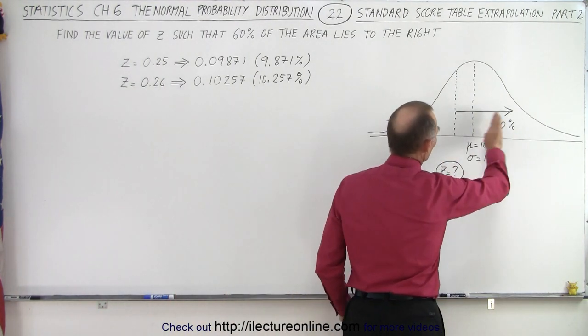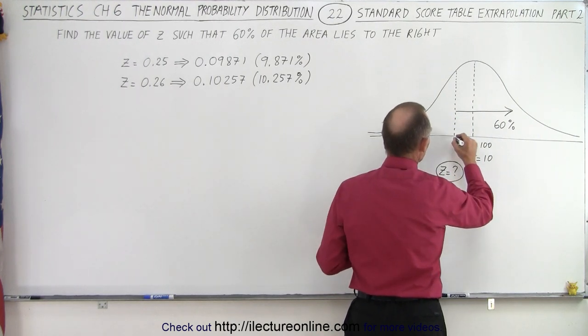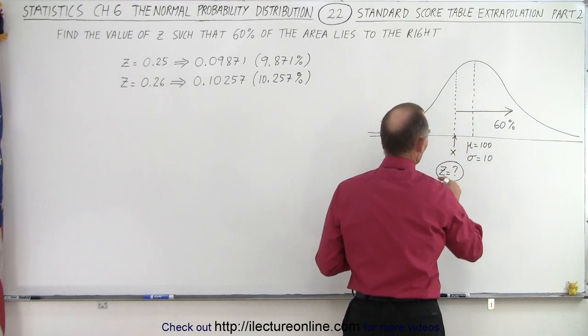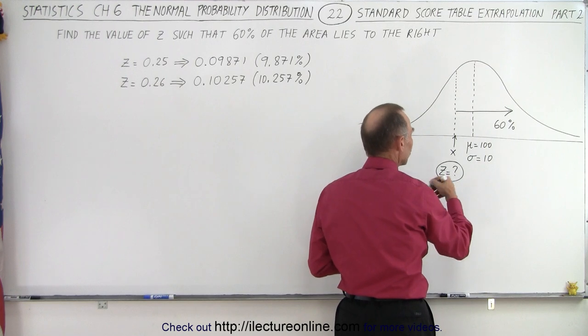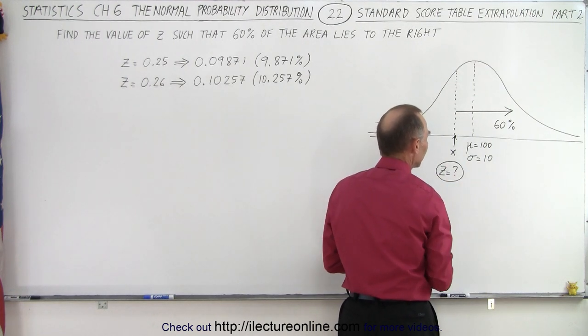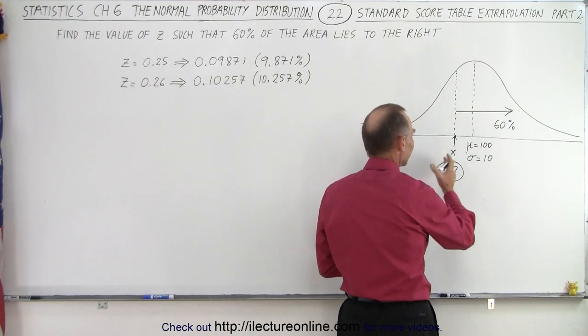So we're looking for the z value corresponding to this point right here. So this is the point x, and we need to find the z value, the number of sigmas, the number of standard deviations to the left of the mean.